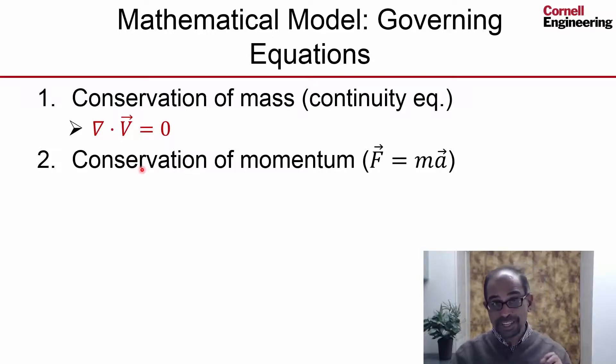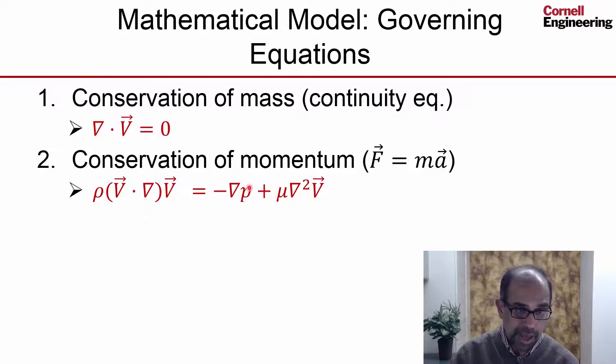The next equation, or set of equations, we will bring in is the conservation of momentum: F = ma. That looks like that, as we saw before. That represents the net pressure force on an infinitesimal fluid particle. That represents the net viscous friction or viscous shear on the infinitesimal fluid particle, and these are written per unit volume. That's the acceleration and that's the density, so that's F and that's ma, everything written on a per volume basis.